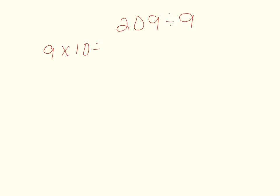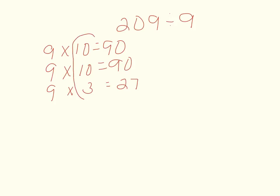Now let's look at the problem 209 divided by 9. Remember, the goal is to use the divisor and multiply it by easy multiplication facts to help you reach 209. I know that 9 times 10 equals 90, and I'm going to do another 9 times 10, which is 90. I now have 180, so I need about 27 more. I know that 9 times 3 equals 27. So now I take the factors I multiplied 9 by, and I know that 9 times 23 equals 207.